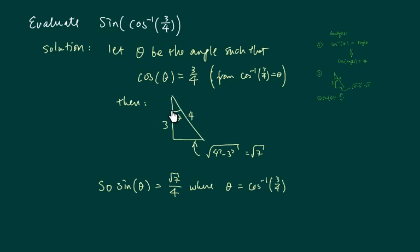You want to do this because here's the triangle with the angle. We can find out what the opposite side is, which is radical 7 for this problem.